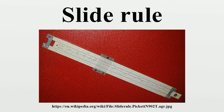There are two main types of cylindrical slide rules: those with helical scales such as the Fuller, the Otis King, and the Bygrave slide rule; and those with bars, such as the Thacker and some Loga models. In either case, the advantage is a much longer scale, and hence potentially greater precision, than afforded by a straight or circular rule.